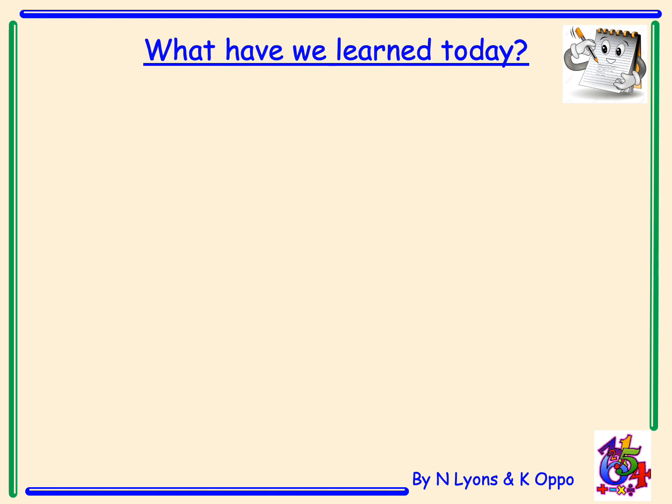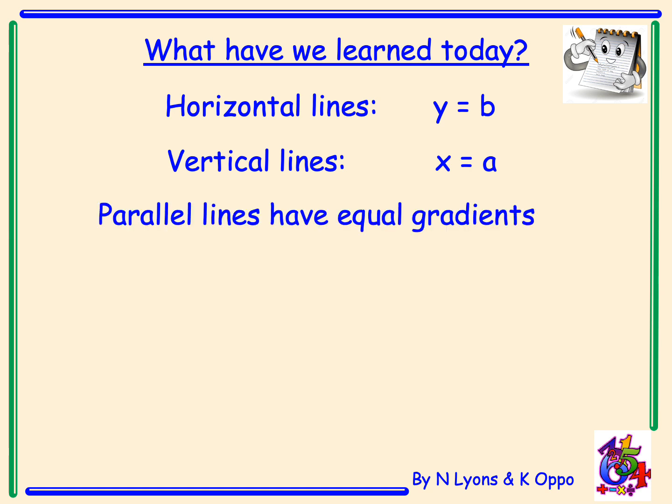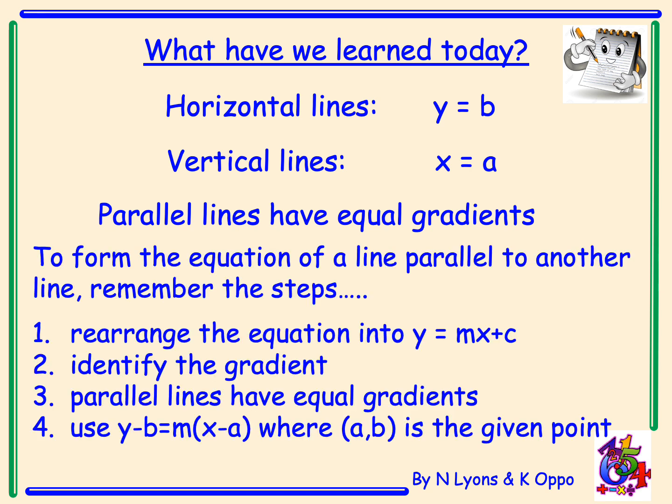So what have we learned today? Horizontal lines have the general equation y equals b, where b is where the line cuts the y axis. Vertical lines have the equation x equals a, where a is the point where the line cuts the x axis. Parallel lines have equal gradients. To form the equation of a line parallel to another: rearrange into y equals mx plus c to identify the gradient, then use y minus b equals m(x minus a), where a and b are the coordinates of the given point.